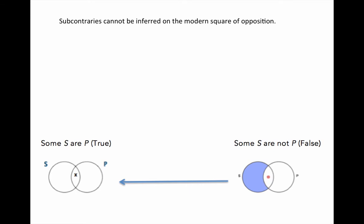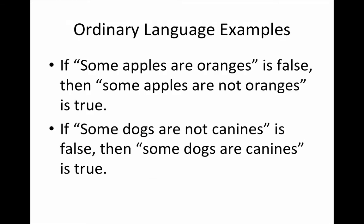Remember, subcontraries cannot be inferred on the modern square of opposition. Here are some examples. Read through them so you can see some conceptual examples rather than just straight visuals with the Venns of how a subcontrary is validly inferred when the particular or the premise is false.